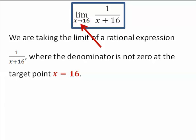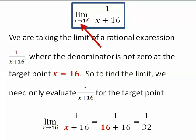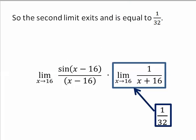So the target point is 16, and the denominator is not going to zero there. So to find the limit, we need only evaluate 1 over x plus 16 for that target point. And so the limit, as x goes to 16, is 1 over 32. And we have that the second limit does exist and is equal to 1 over 32.